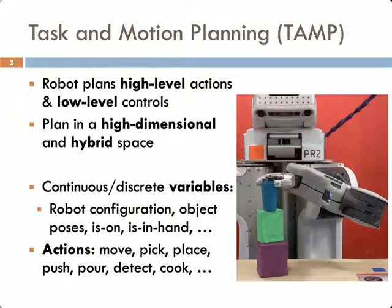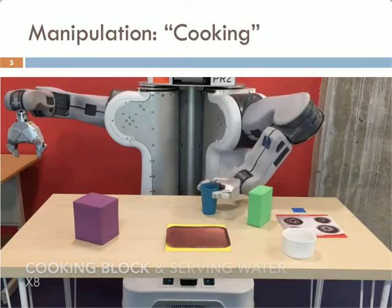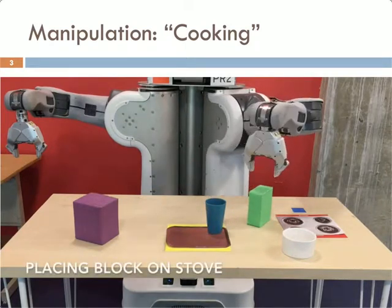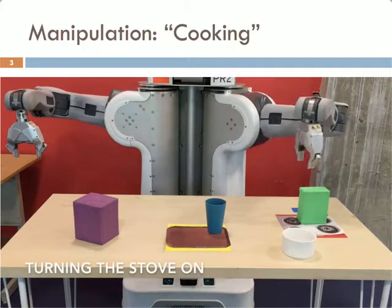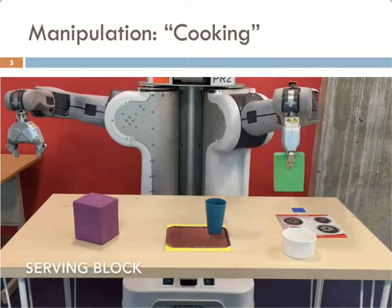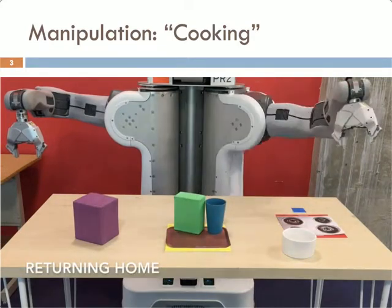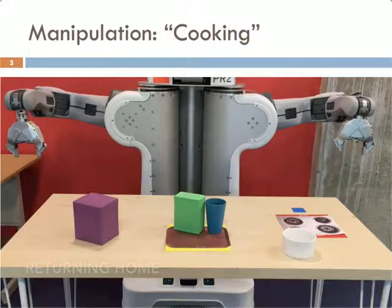We hope to be able to plan for problems with a variety of different actions. Here's an example of a robot solving a real-world task and motion planning problem. The goal is to prepare a meal for a human, requiring serving both a cup full of water and also cooking the green block — which we can think of as broccoli — and serving it to the human. Critically, the robot has to identify not only the operations it needs to achieve, such as cooking the block, but also select the placements of these objects on the tray such that they are safe and collision-free.